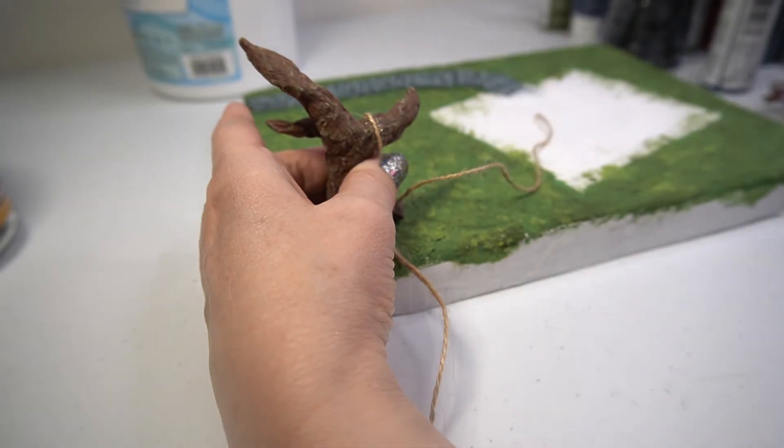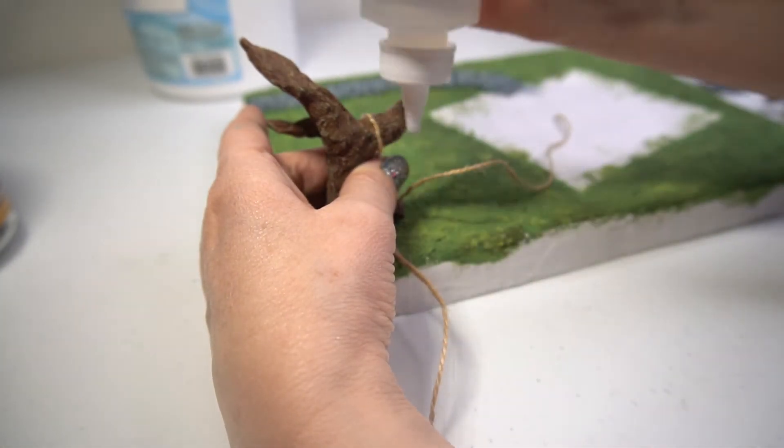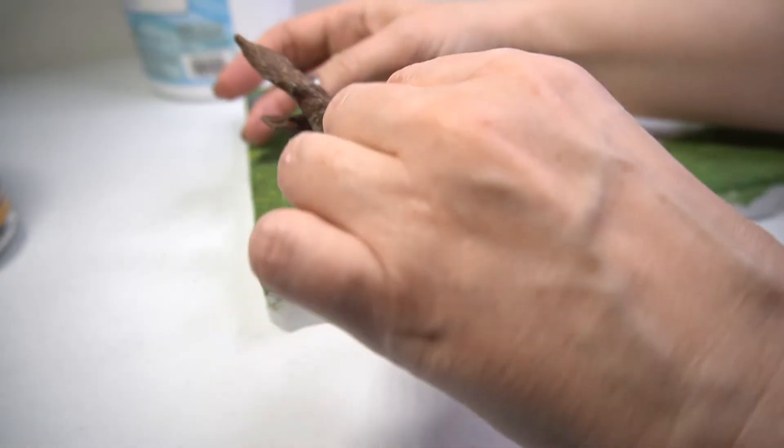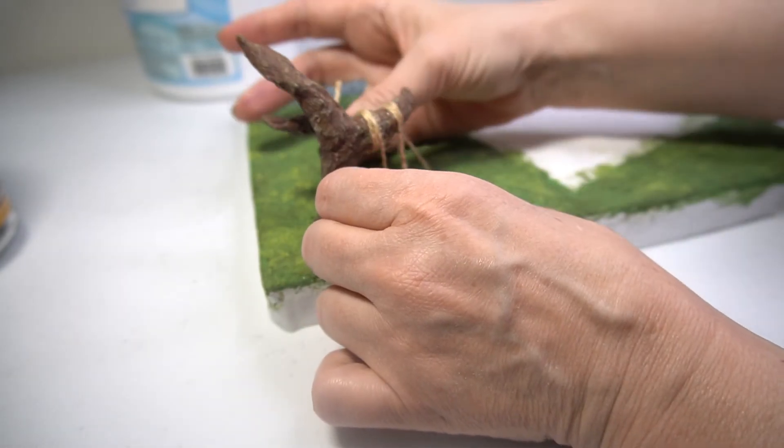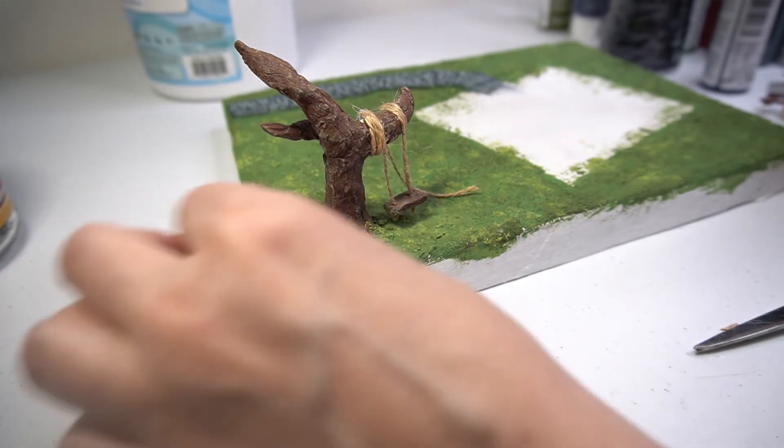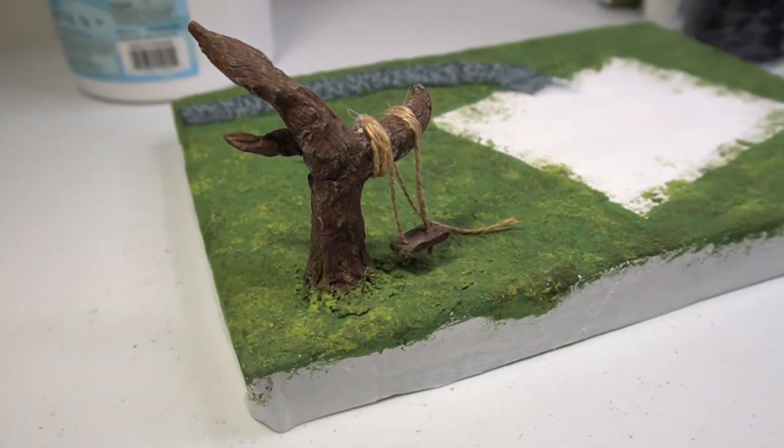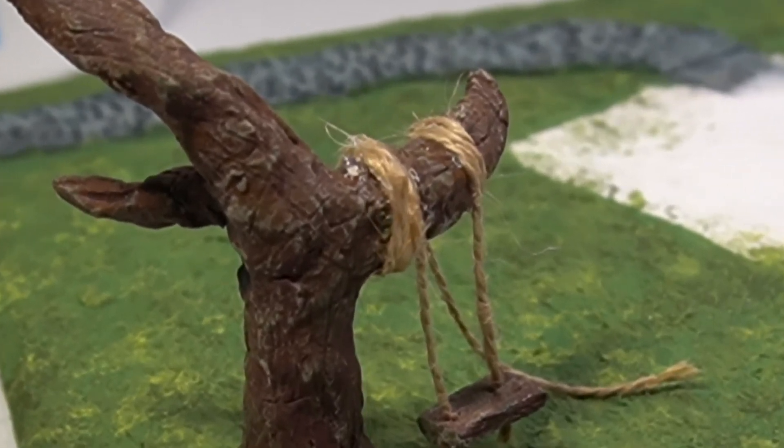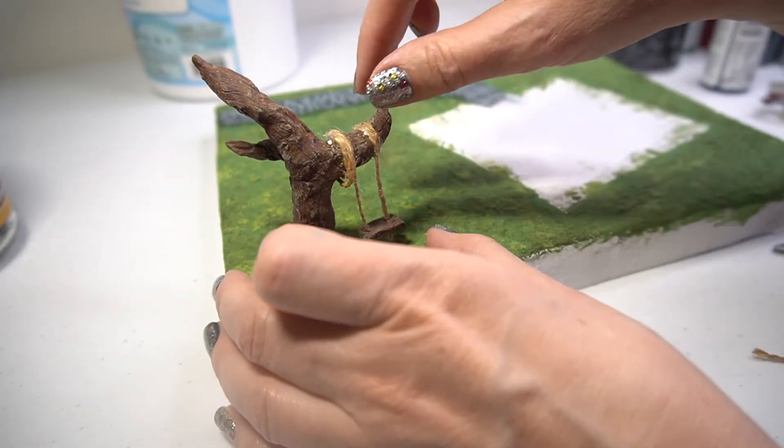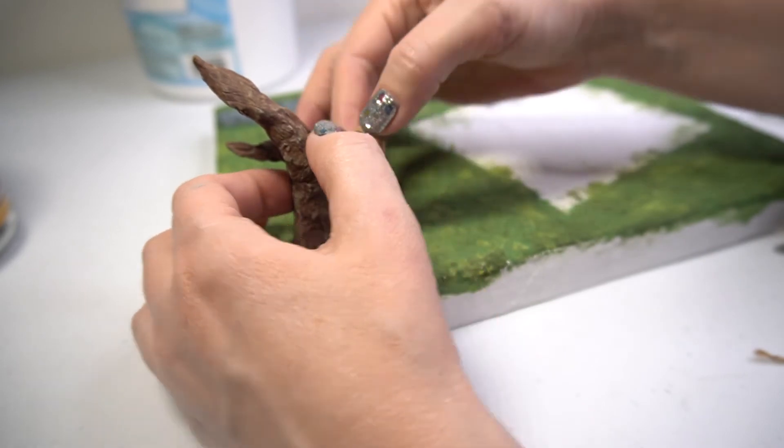I used some thin jute that I have on hand to mimic rope and attached the swing to the tree branch using Alline's Clear Gel Tacky Glue. It held eventually, but this glue dries a bit slower, so things kept popping up for a few minutes. I held everything down until it stayed put.